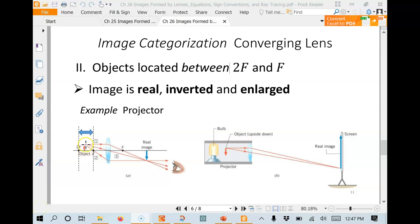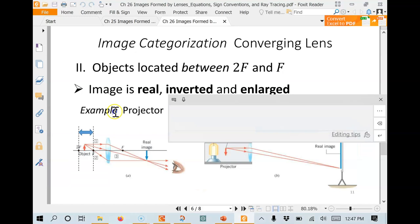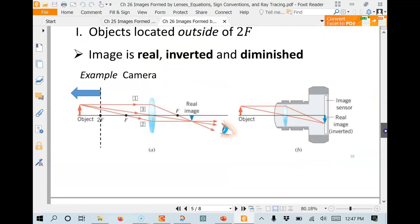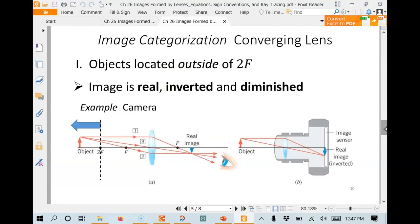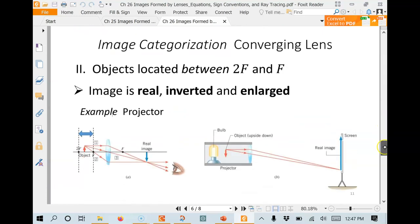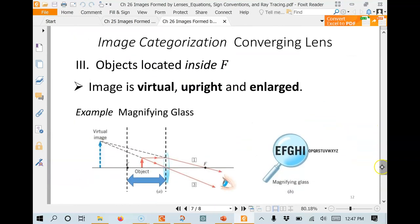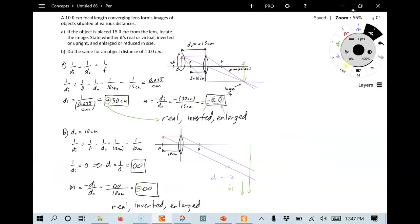And of course, if you take this image, push it closer to F, that's just going to push this thing further, further out and make it bigger and bigger and bigger and further and further away. And if you actually cross over F, right, that's what we saw in part B, work right at F. If you cross over to F, once you go inside F, all of a sudden it flips backwards and then you get a virtual image. So part B is right at the intersection, crossover point between those two.